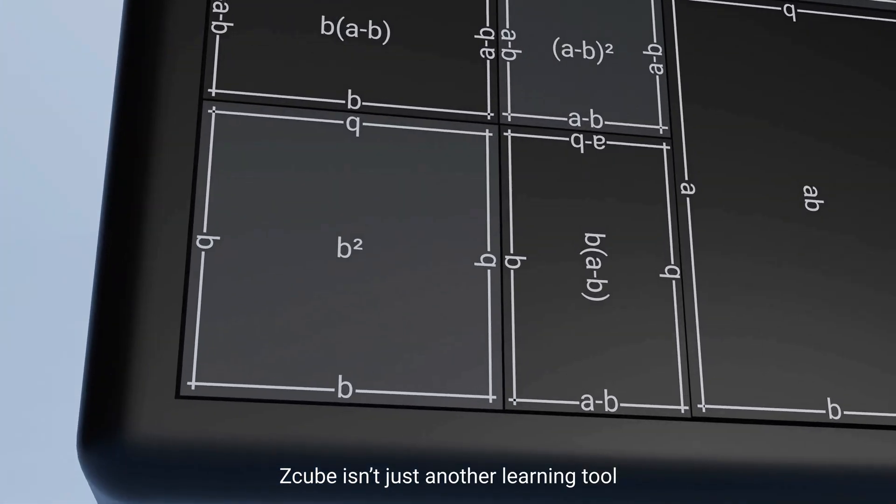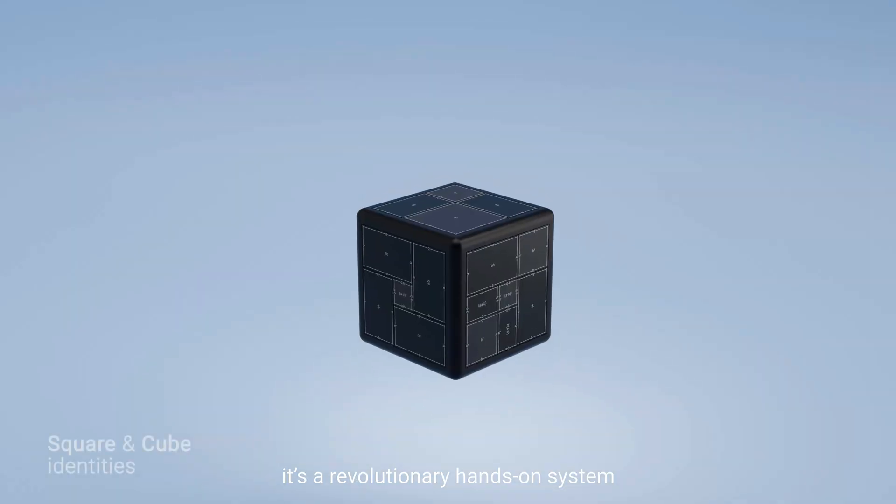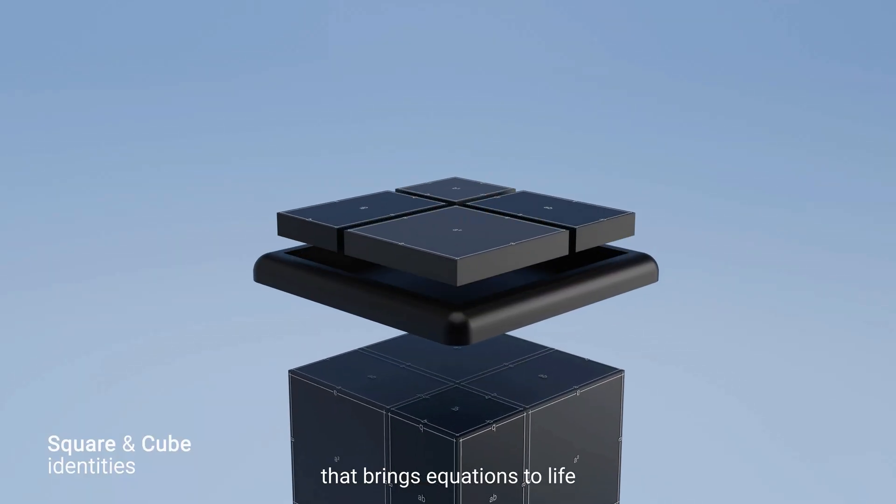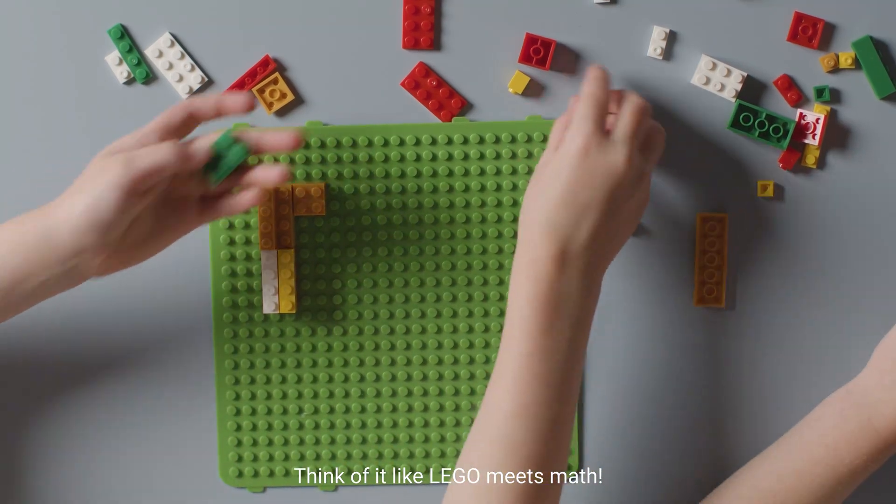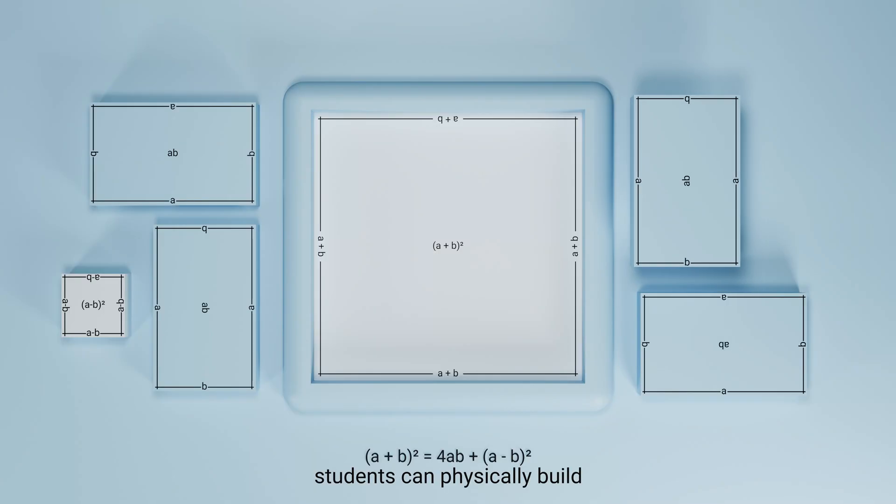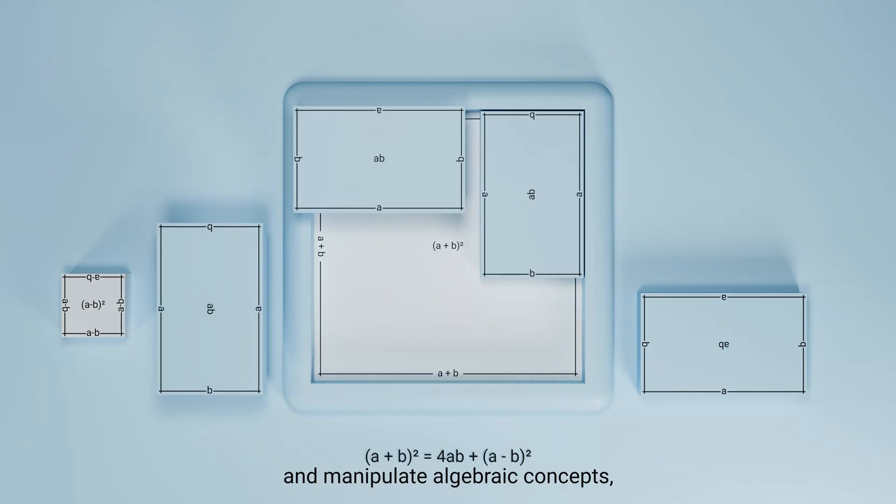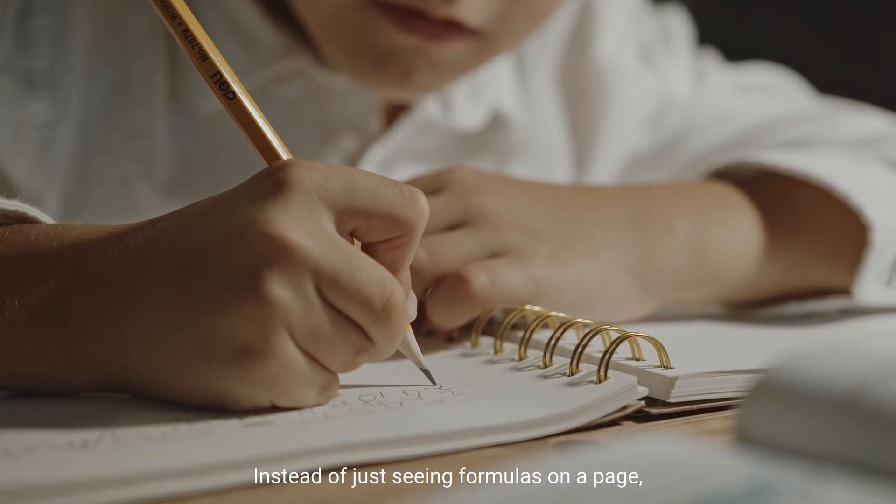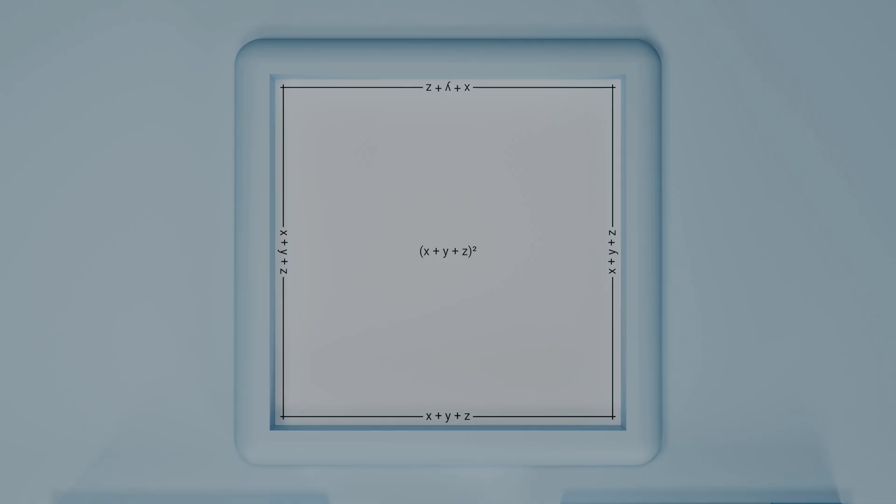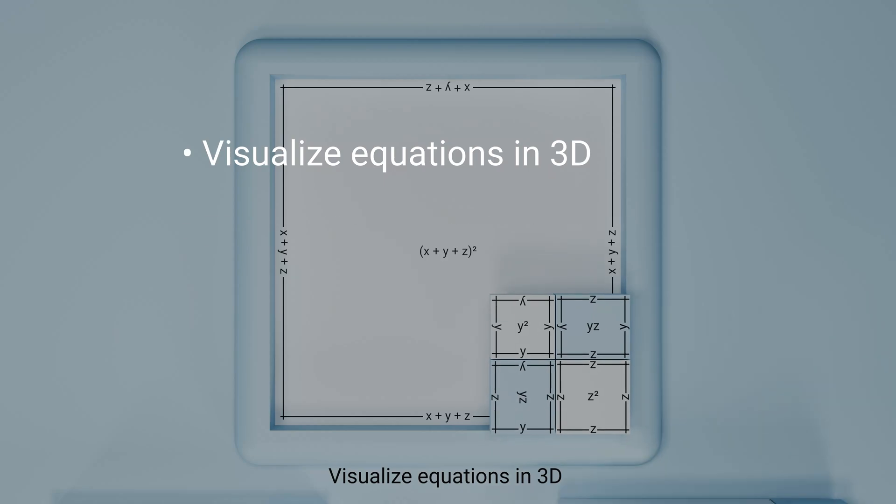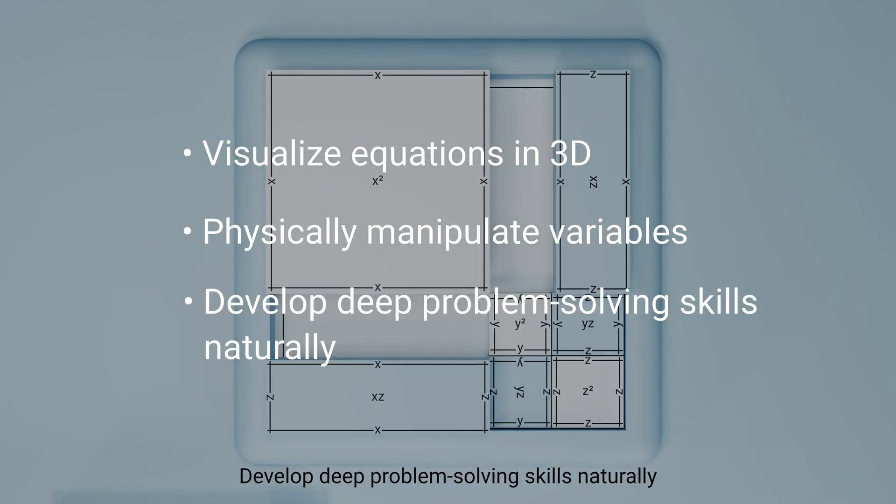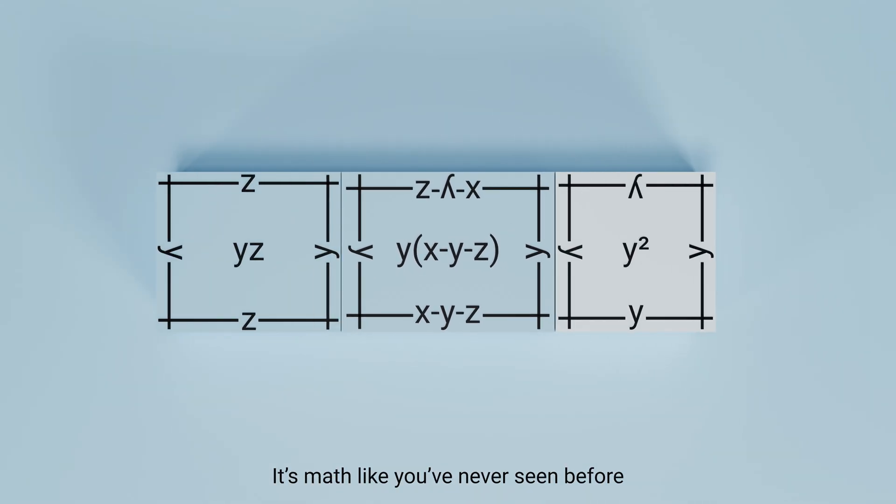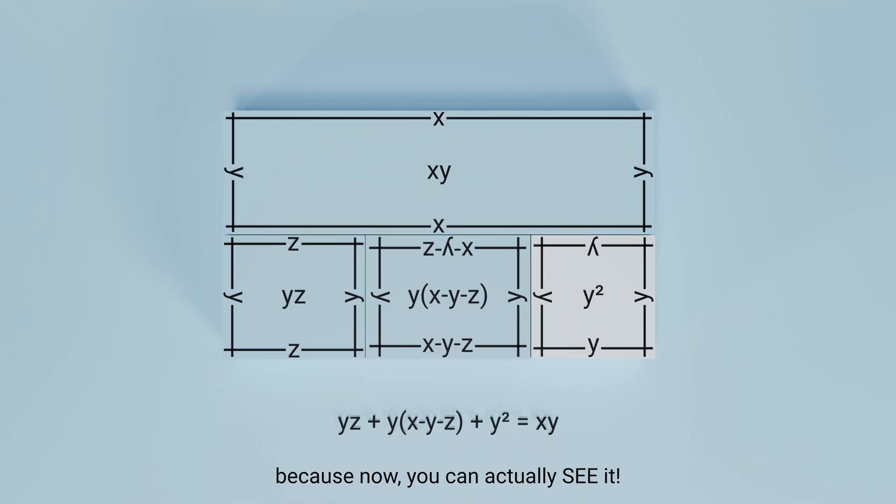G Cube isn't just another learning tool—it's a revolutionary hands-on system that brings equations to life. Think of it like Legos meets math. With G Cube, students can physically build and manipulate algebraic concepts, making learning interactive, engaging, and fun. Instead of just seeing formulas on a page, students can visualize equations in 3D, physically manipulate variables, and develop deep problem-solving skills naturally. It's math like you've never seen before, because now you can actually see it.